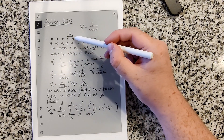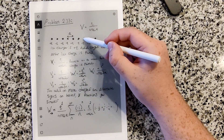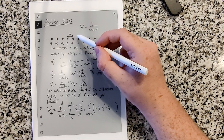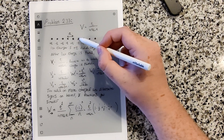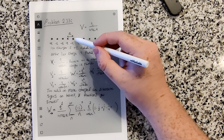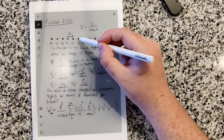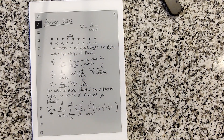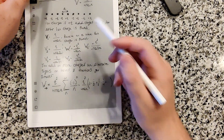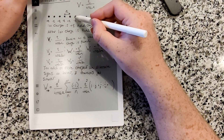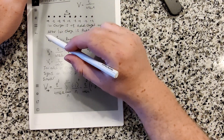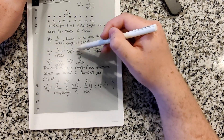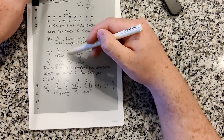If we want to know the potential created at a point once we have two charges already assembled, we add up the potentials that each charge creates there. The work to pull in a charge -q at distance a would be the potential created by the existing charge times the charge being pulled in, giving -q² over 4πε₀a.